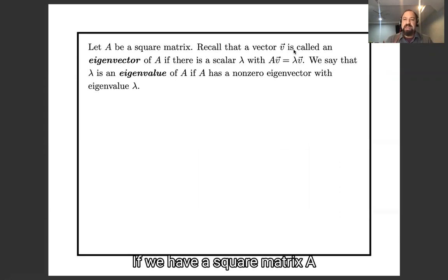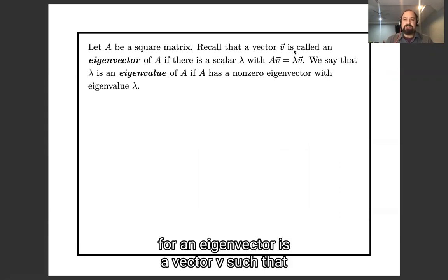So I'll remind you what these concepts mean. If we have a square matrix A, then an eigenvector is a vector v such that Av is a scalar multiple v, and the scalar is called the eigenvalue.